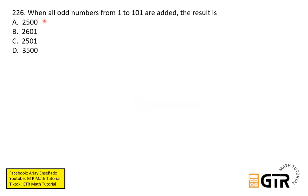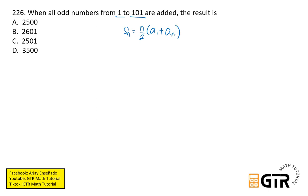Number 226: when all odd numbers from 1 to 101 are added, the result is? The formula we'll use here is the sum of arithmetic progression. Since we have the first term and the last term, we'll use S sub n equals n over 2 times (a sub 1 plus a sub n).